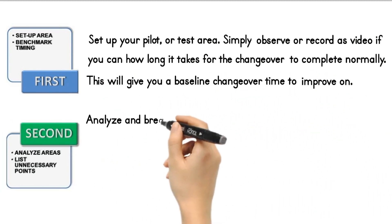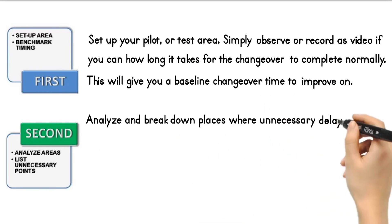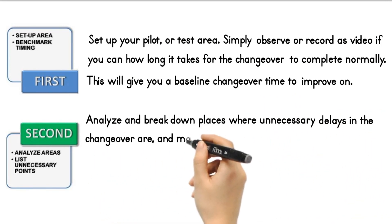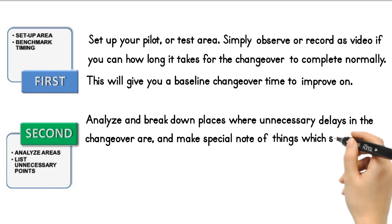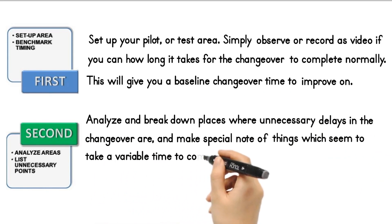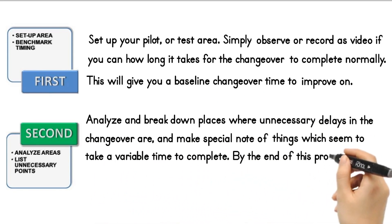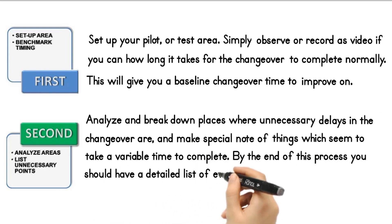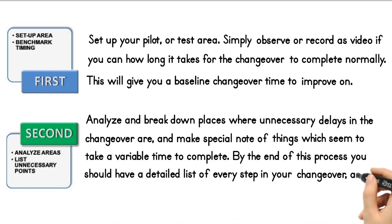Second step: Analyze and break down places where unnecessary delays in the changeover are, and make special note of things which seem to take a variable time to complete. By the end of this process you should have a detailed list of every step in your changeover and average time to complete for each step.